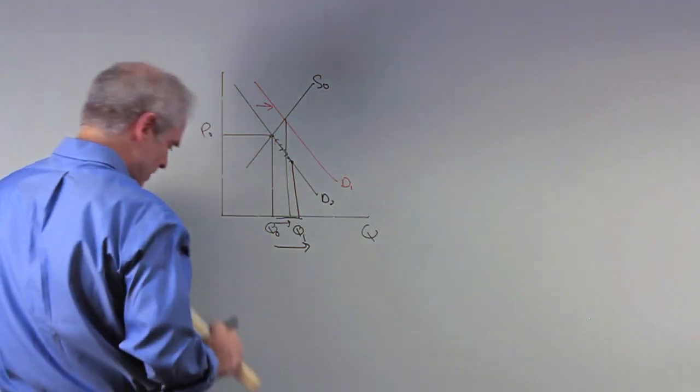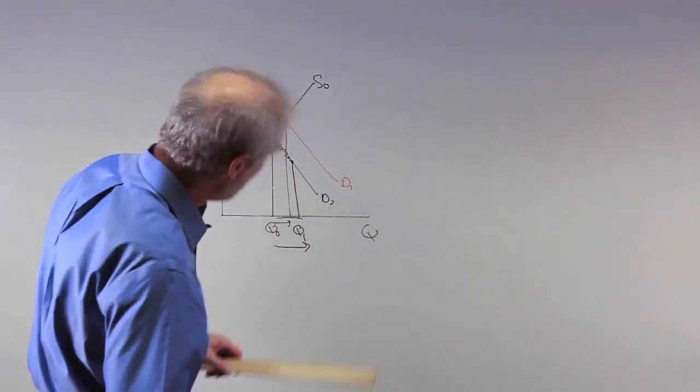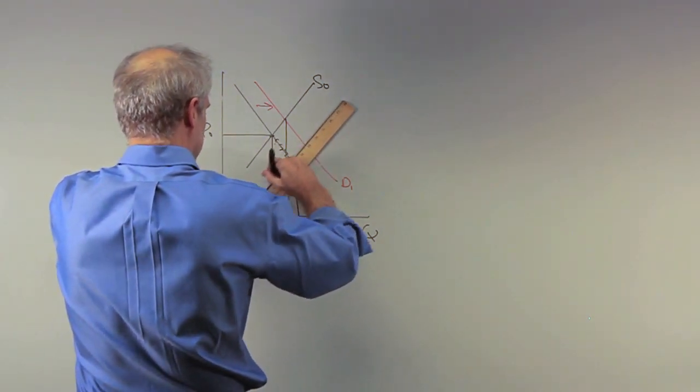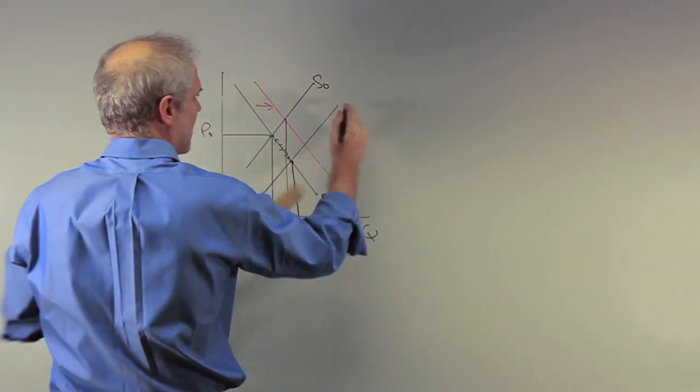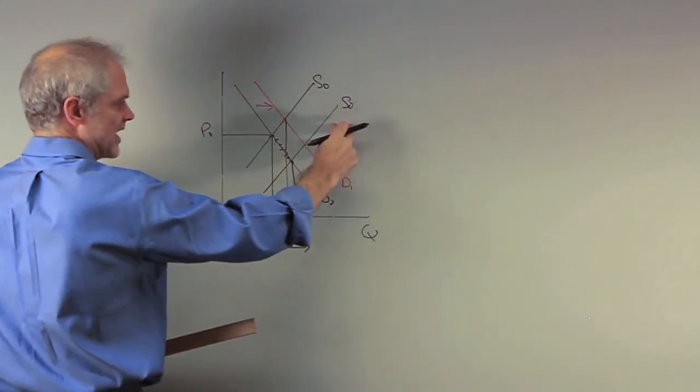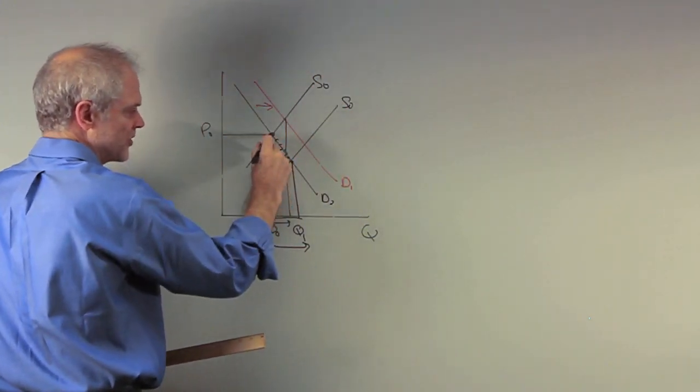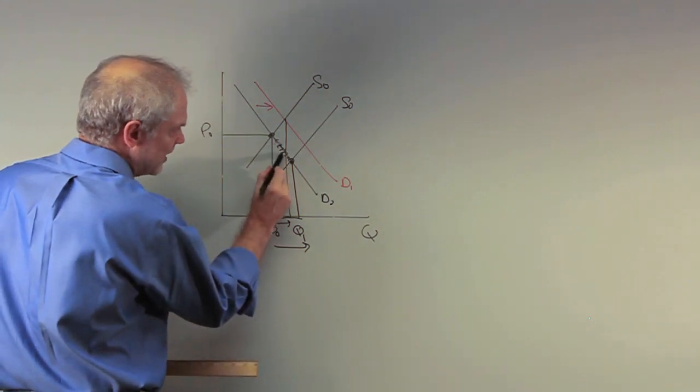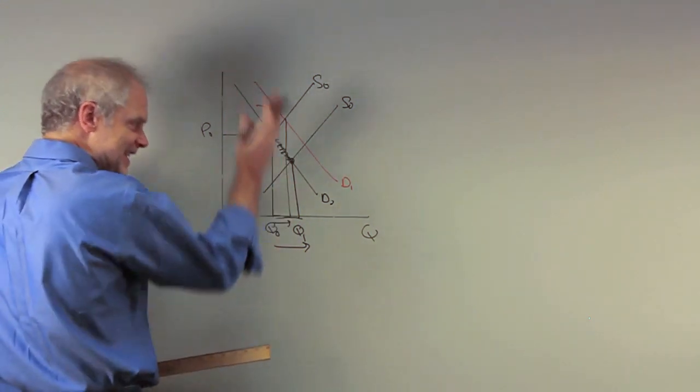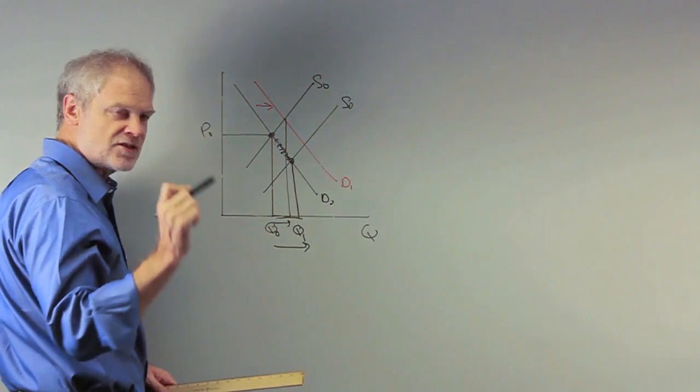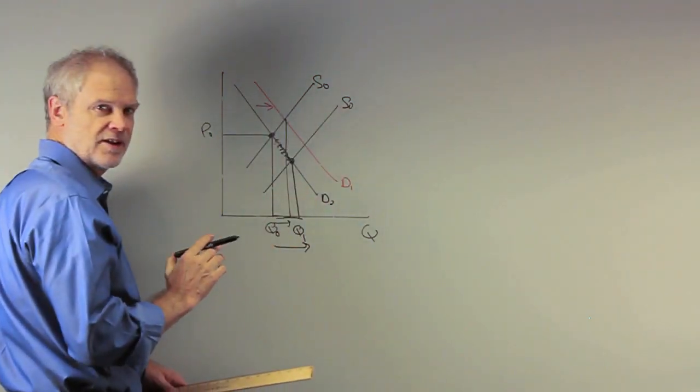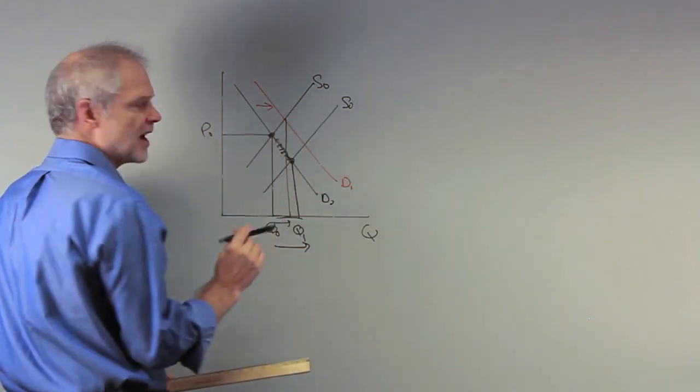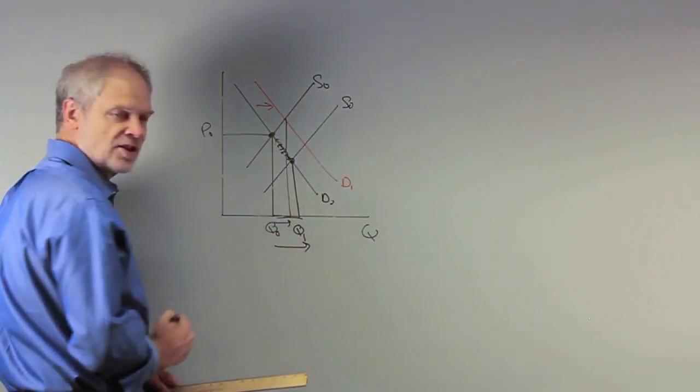But when there's an increase in quantity demanded caused in this particular case by a shift in supply, so if supply shifts out from S0 to S1, and new equilibrium goes from here to here, you get a movement along the demand curve caused by the decrease in price. But the decrease in price is caused by the shift in supply. We call this an increase in supply resulting in an increase in quantity demanded.